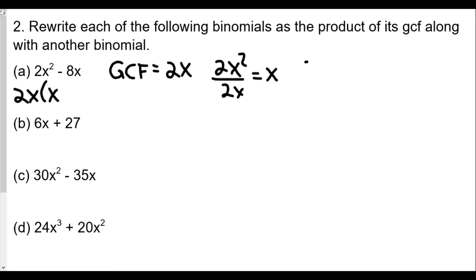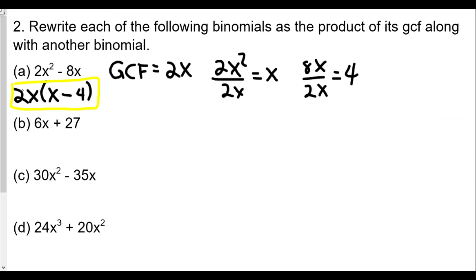Then 8x ÷ 2x = 4, with a minus sign between. The answer for (a) is 2x(x − 4). The idea of pulling out the greatest common factor — not just any factor — ensures the binomial cannot be factored any further.